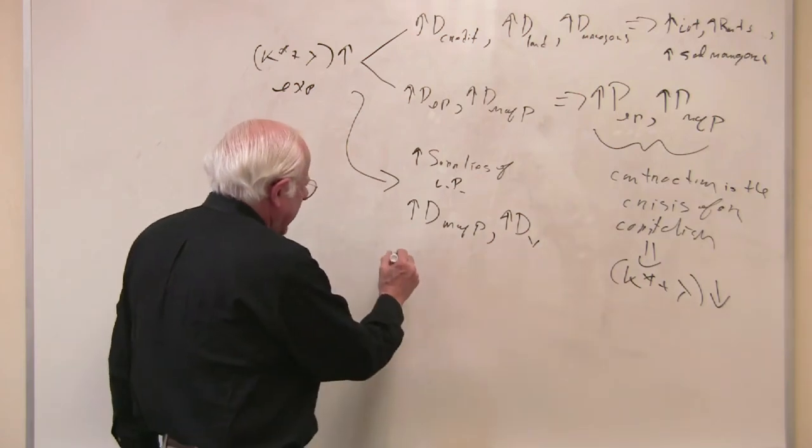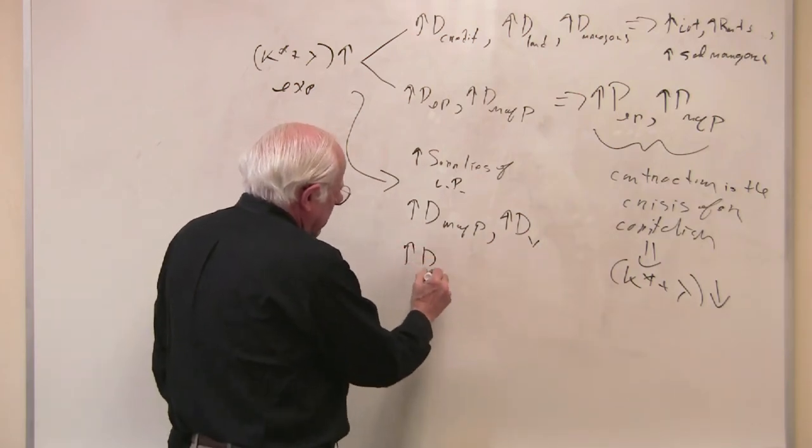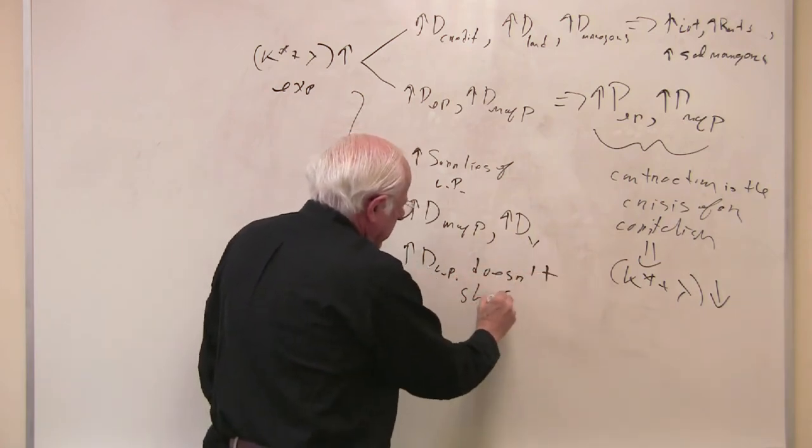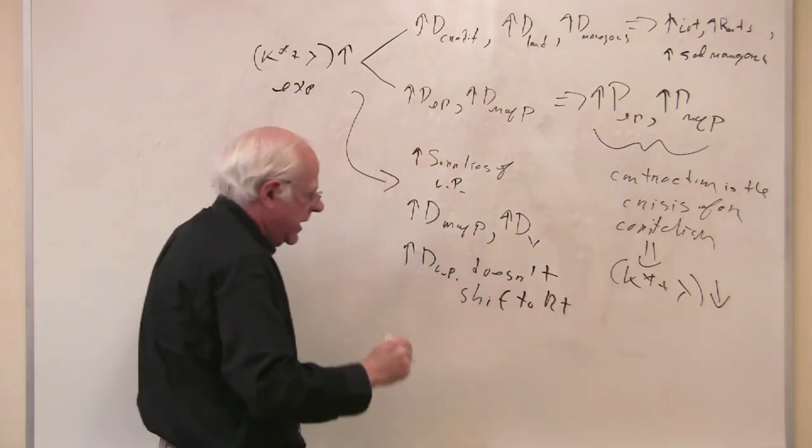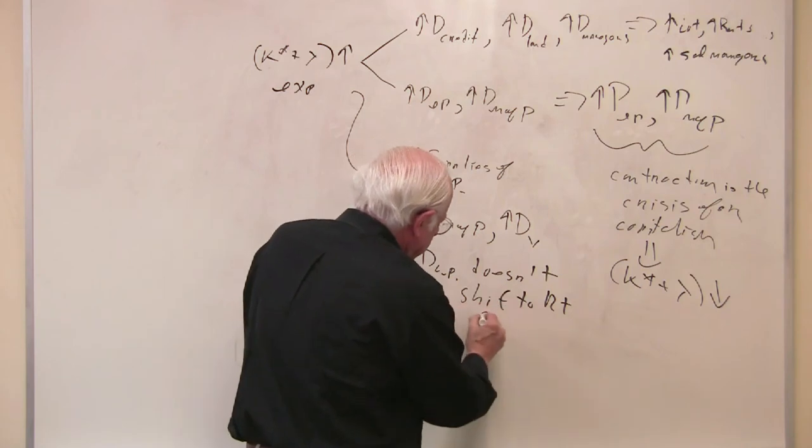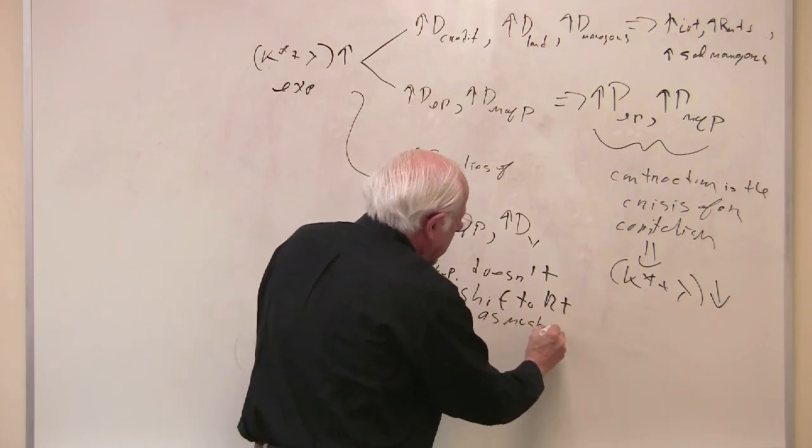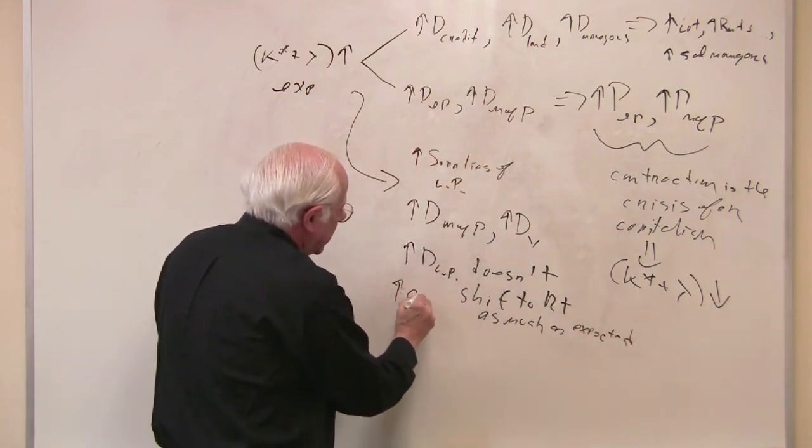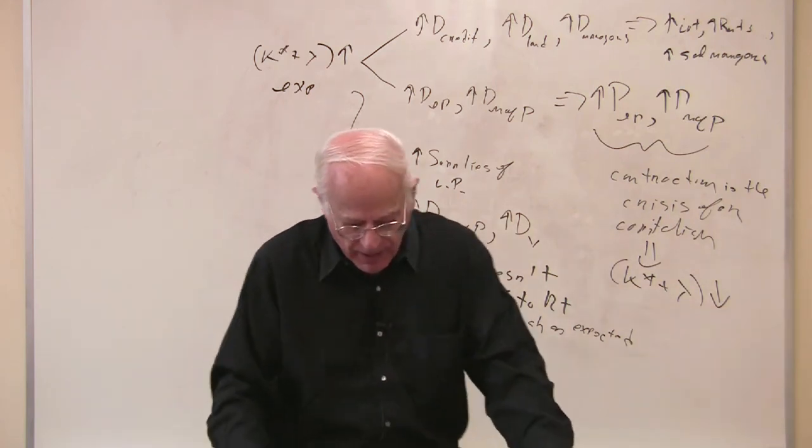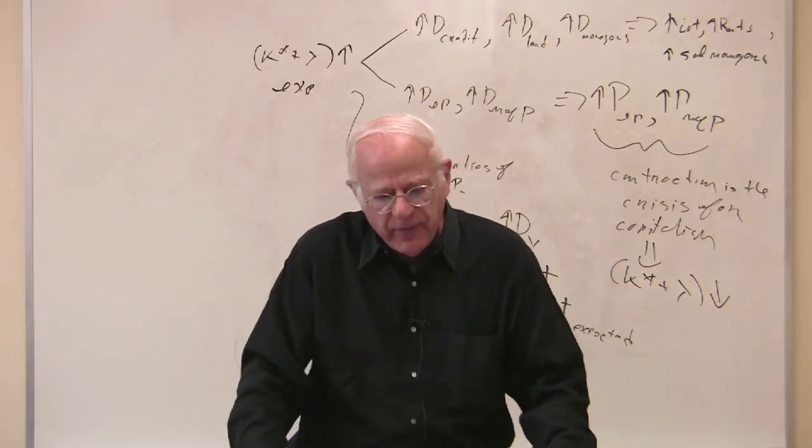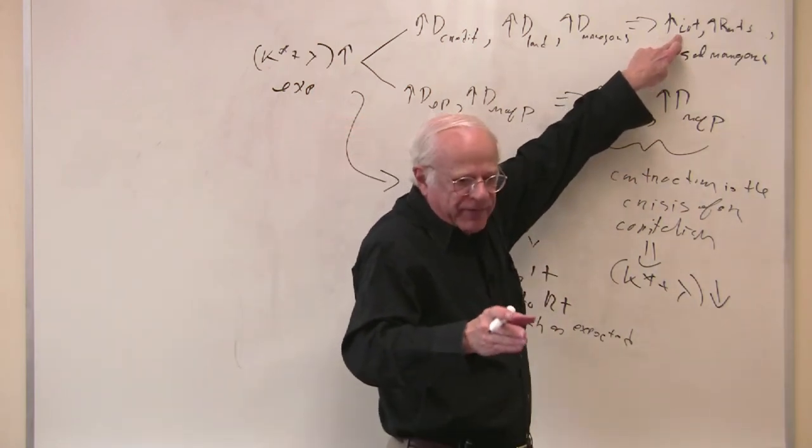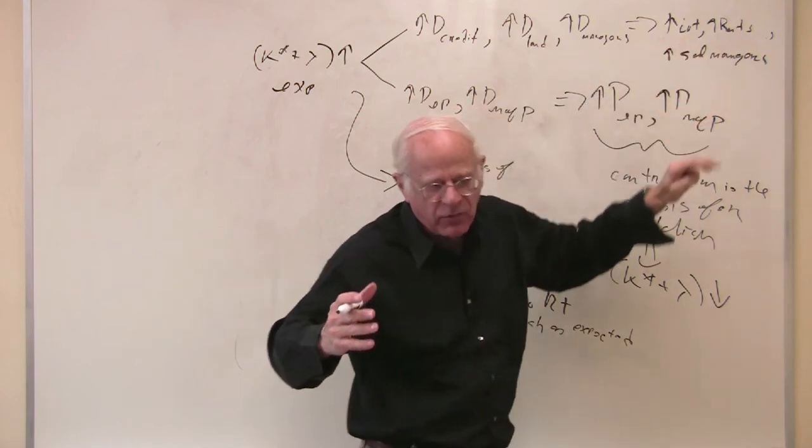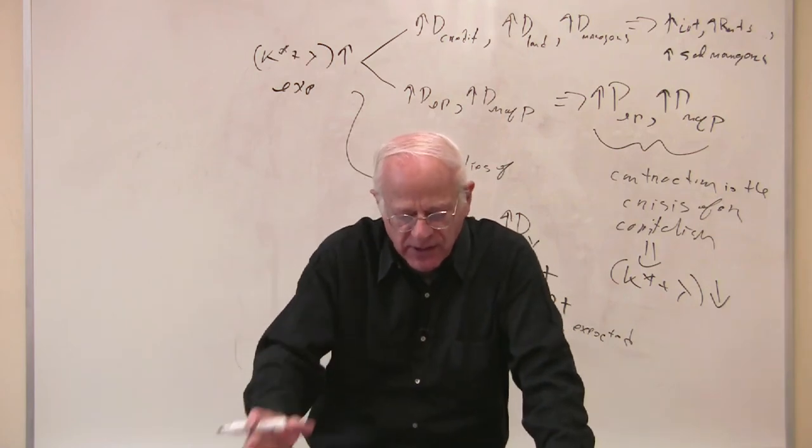You can also have changes in technology such that the demand for labor power doesn't shift to the right as much. It shifts, but it doesn't shift to the right as much as expected. What's that all about? That's a rise in the composition of capital. That's C over C plus V may rise. You can have the state stepping in to offset the rising interest rate by increasing the supply of credit, the supply of money in the society to offset an increased interest rate. That's what the state is doing now.